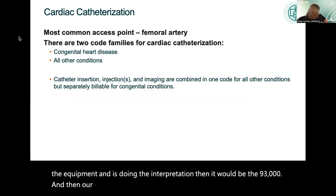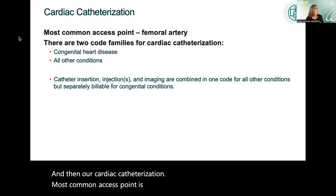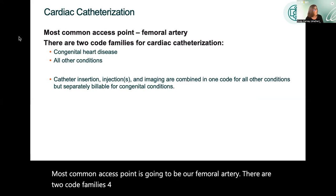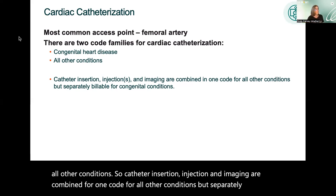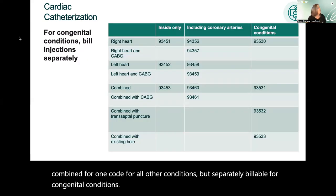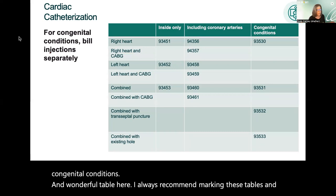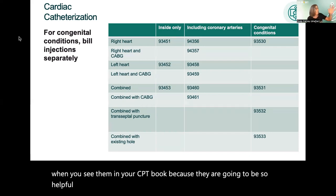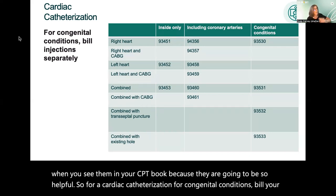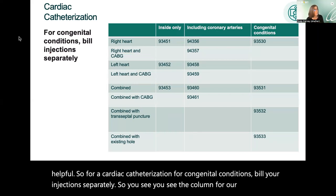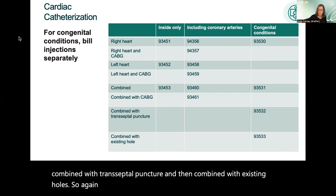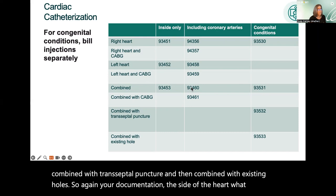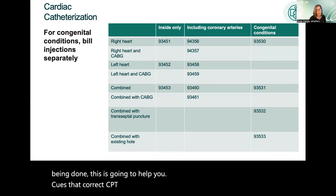For cardiac catheterization, the most common access point is the femoral artery. There are two code families: congenital heart disease, and all other conditions. Catheter insertion, injection, and imaging are combined for one code for all other conditions but are separately billable for congenital conditions. The CPT contains a table for cardiac catheterization — mark these tables in your CPT book as they are very helpful. For congenital conditions, bill injections separately. The right heart code, combined with transeptal puncture or combined with existing holes, guides code selection based on documentation of what was done.